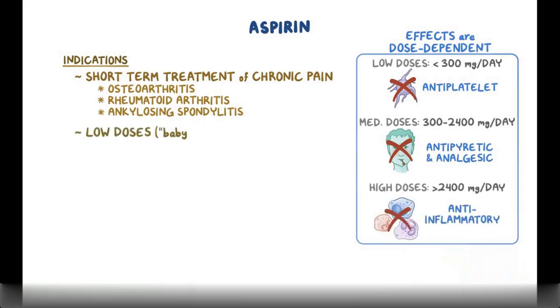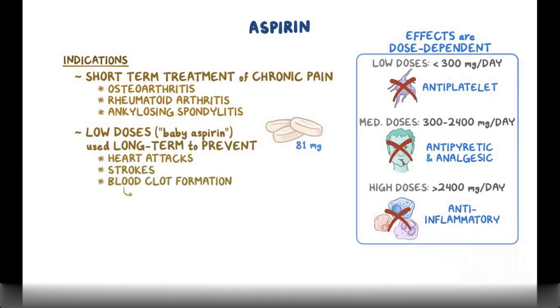Low doses, or baby aspirin, in the form of 81 mg tablets, are used long-term to help prevent heart attacks, strokes, and blood clot formation in people at high risk of developing blood clots.